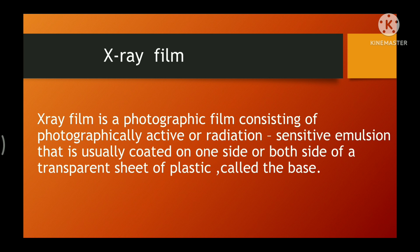As you have already seen when we take a photograph from a camera, inside the camera there is a film which is black in color. Similarly, X-ray film consists of a photographically active, radiation-sensitive emulsion layer coated on one side or both sides of the film, on a transparent sheet of plastic known as the base. Note that X-ray film has two very important parts: one is the emulsion and the other is the base.